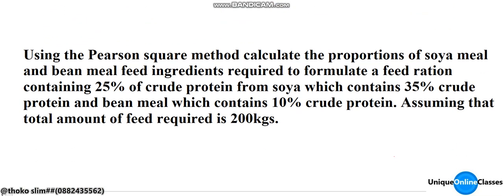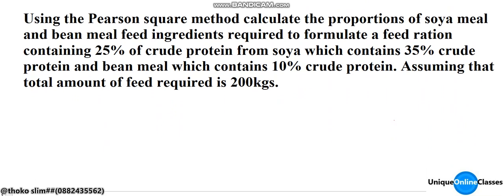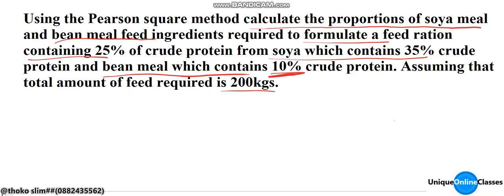The question reads: using the Pearson Square method, calculate the proportions of soya meal and bean meal feed ingredients required to formulate a feed ration containing 25% crude protein, from soya meal which contains 35% crude protein and a bean meal which contains 10% crude protein, assuming that the total amount of feed required is 200 kg.